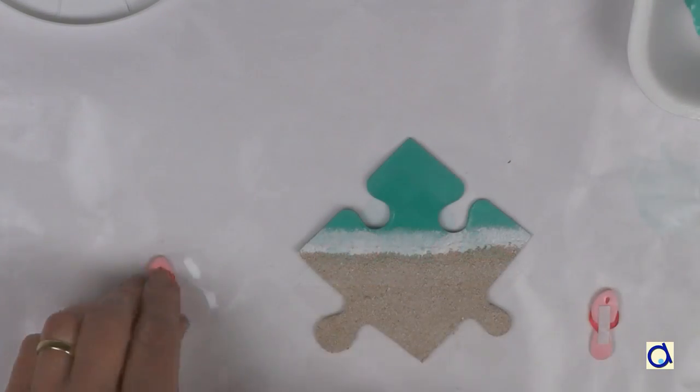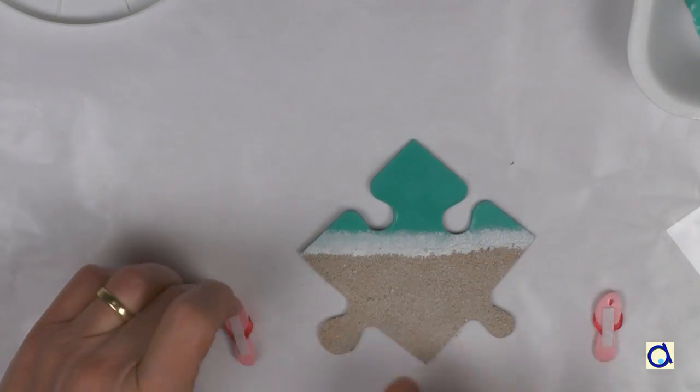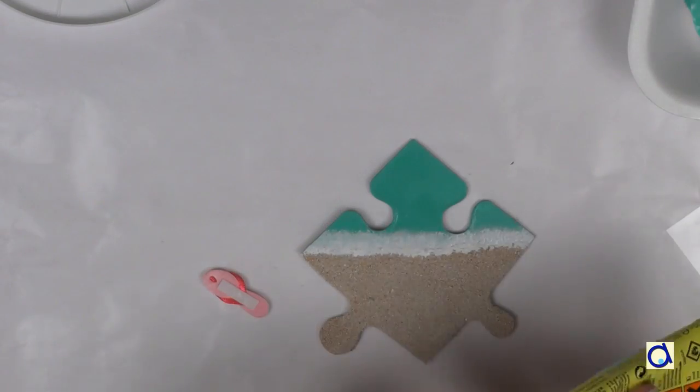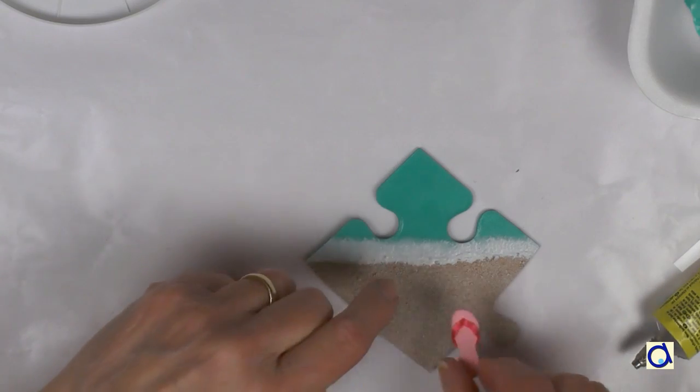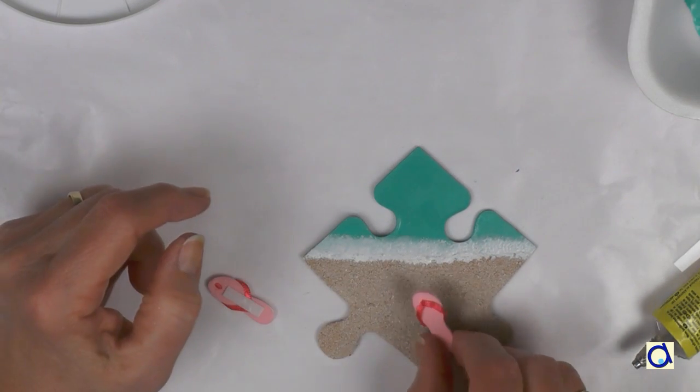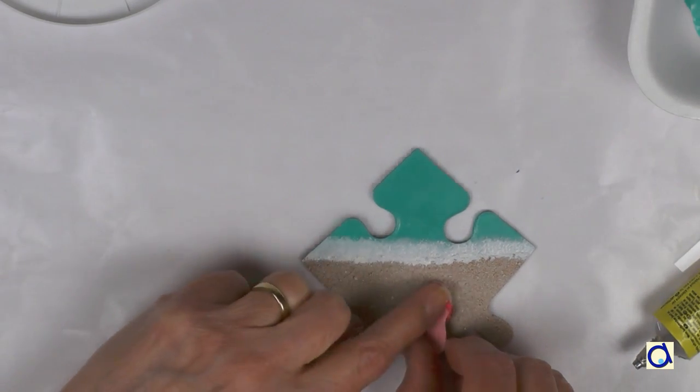If you wish, you can put a coat of varnish over the turquoise side. In a craft store, I found small adhesive foam sandals. These little sandals gave me the idea to create this magnet.